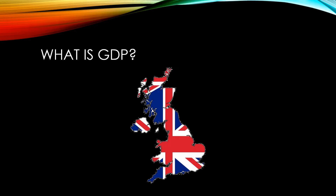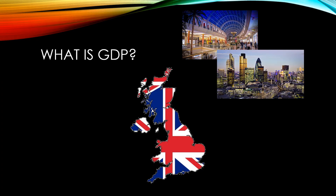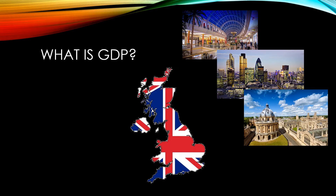GDP is the total value of goods and services produced in a country in a year. In the UK, the service sector accounts for around 80% of GDP. Retail businesses are a part of this. London accounts for the largest share of both the financial services sector and the tourism sector. Educational services, such as international tuition at the UK's prestigious universities, also contribute large amounts to GDP.